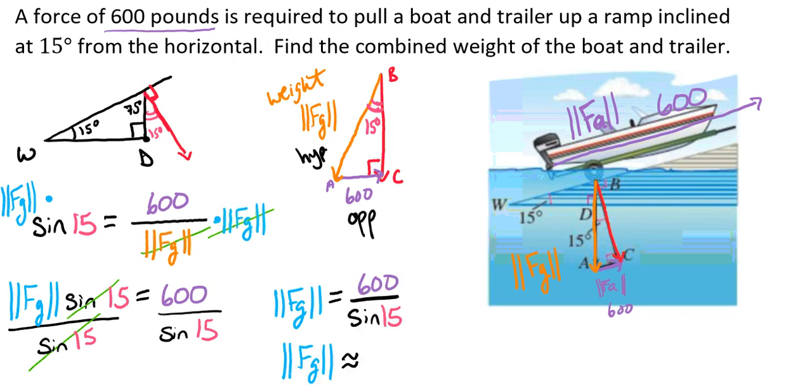We're going to get 600 divided by the sine of 15, and when we plug that into our calculator, we're going to get that the magnitude of the force of gravity is approximately 2,318 pounds. So here we can see that the combined weight of the boat and the trailer is 2,318 pounds.